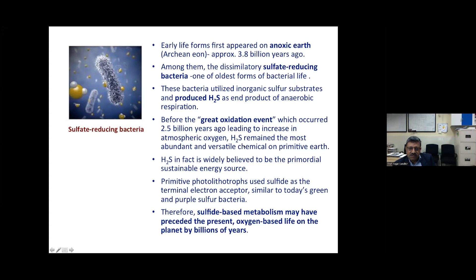Metabolism gradually shifted toward oxygen-dependent pathways, but H₂S remained the most abundant and versatile chemical on primitive Earth. H₂S is widely believed to be the primordial sustainable energy source, based on studies of sulfate-producing bacteria that used sulfides as terminal electron acceptors — a role that oxygen now serves in modern organisms. Even today, green and purple sulfur bacteria still use H₂S as their energy source.